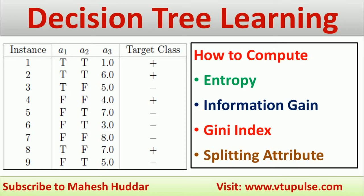Welcome back to machine learning tutorial. In this video, we will understand how to find entropy, information gain, and Gini index. Based on information gain and Gini index, how to select a splitting attribute given a data set. We have been given a data set with nine examples and there are two classes: positive class and negative class, and there are three attributes A1, A2, and A3.